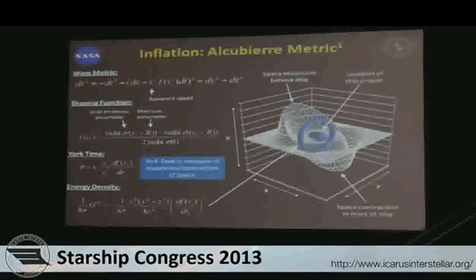The Alcubierre metric is a model that fits into the family of a space warp. I've done some work the last couple years in terms of sensitivity analysis on the field equations. What you see here on the screen are the field equations that Alcubierre put out in 1994, and to the right a little cartoon of the spacecraft that translates that math into a physical interpretation of what it might look like.